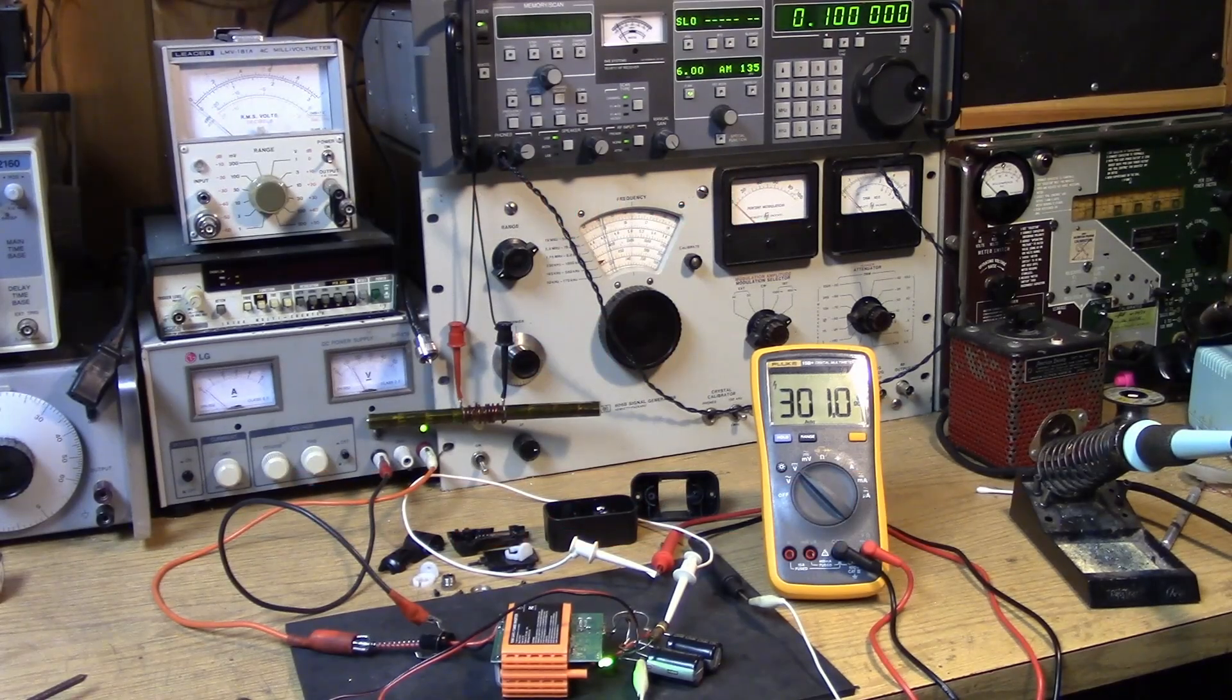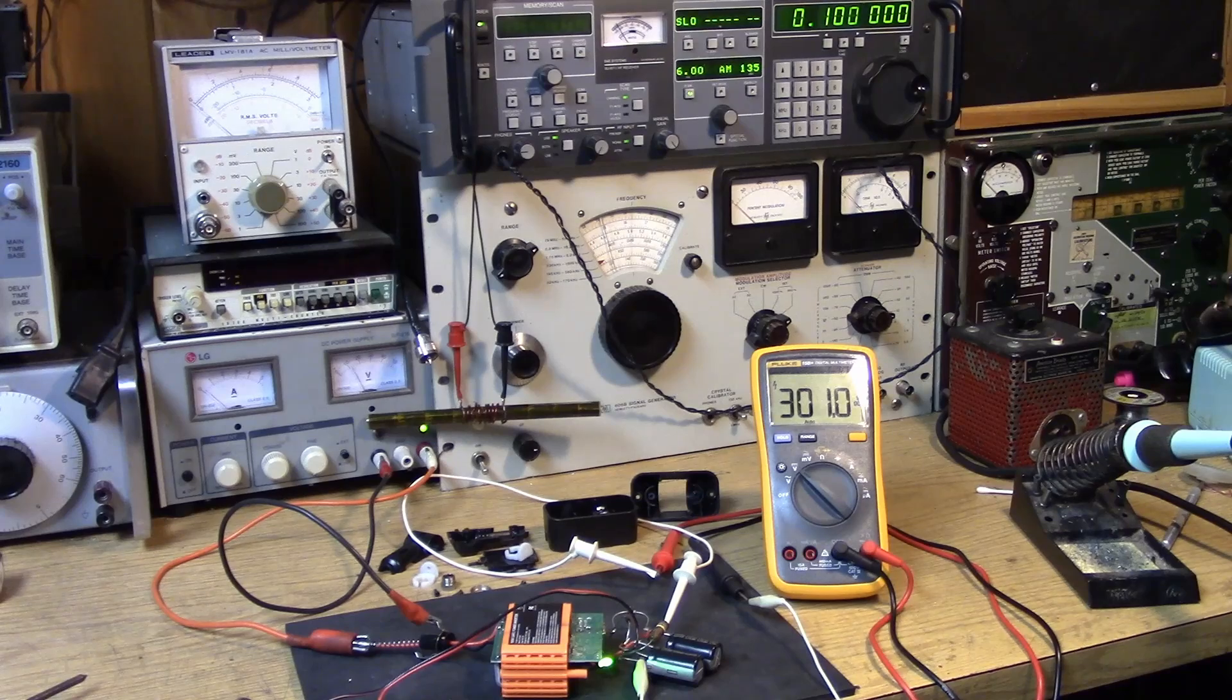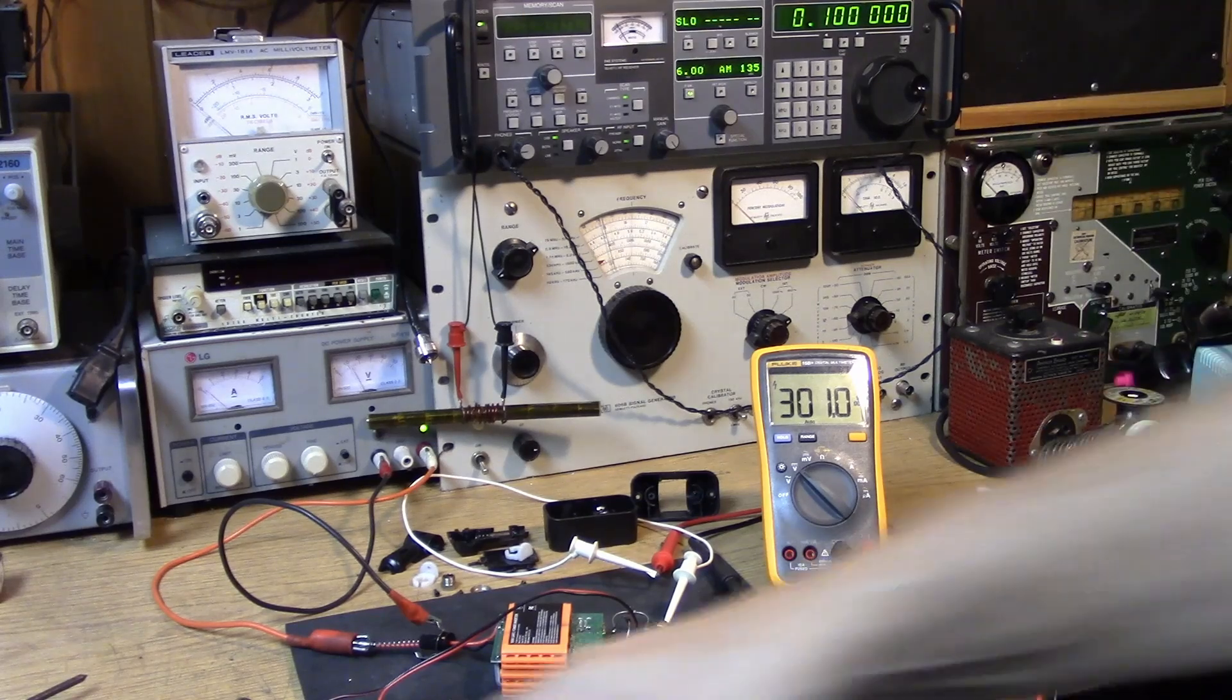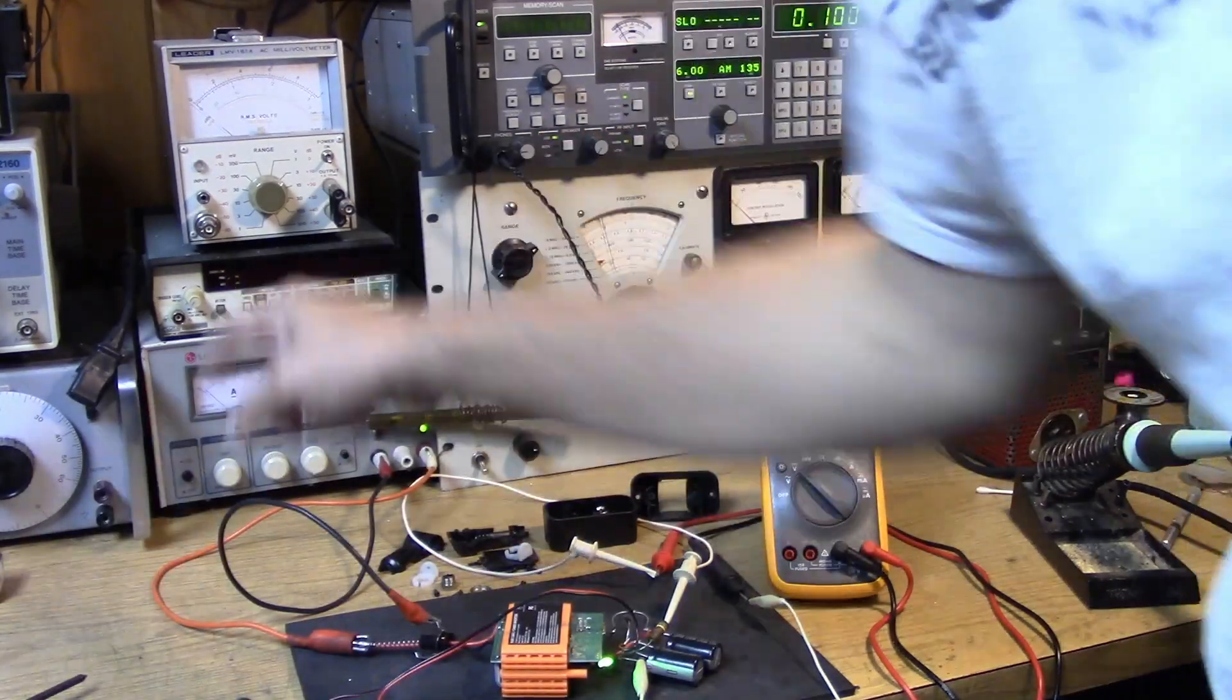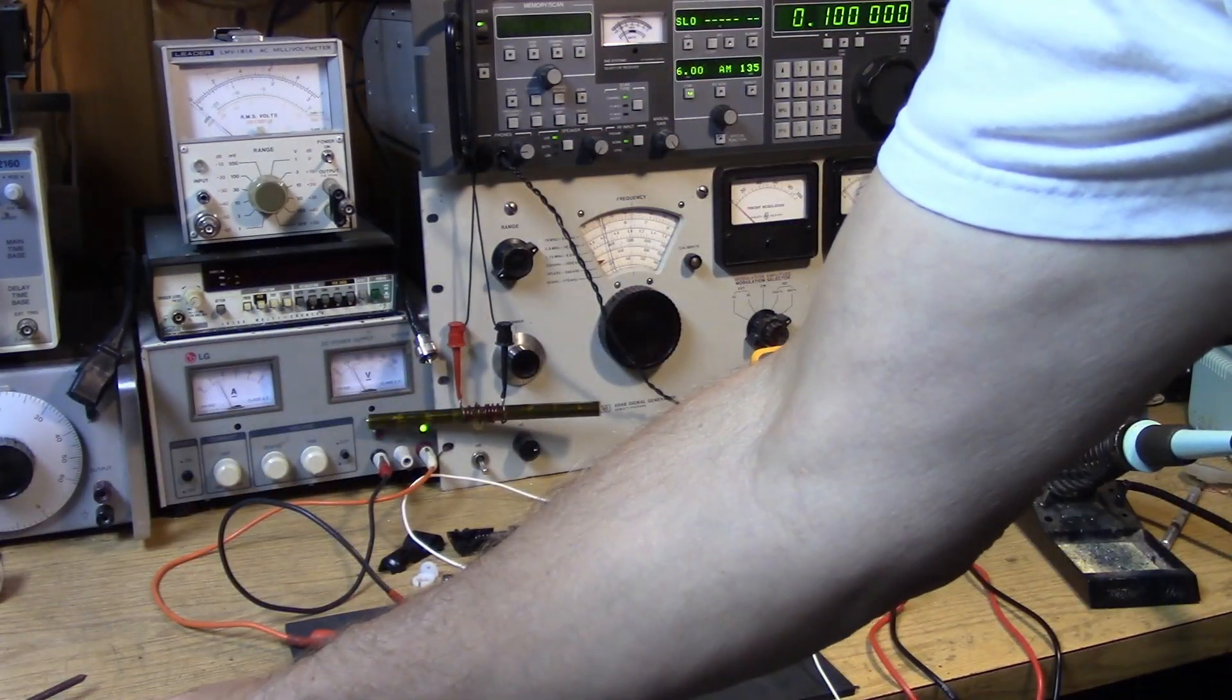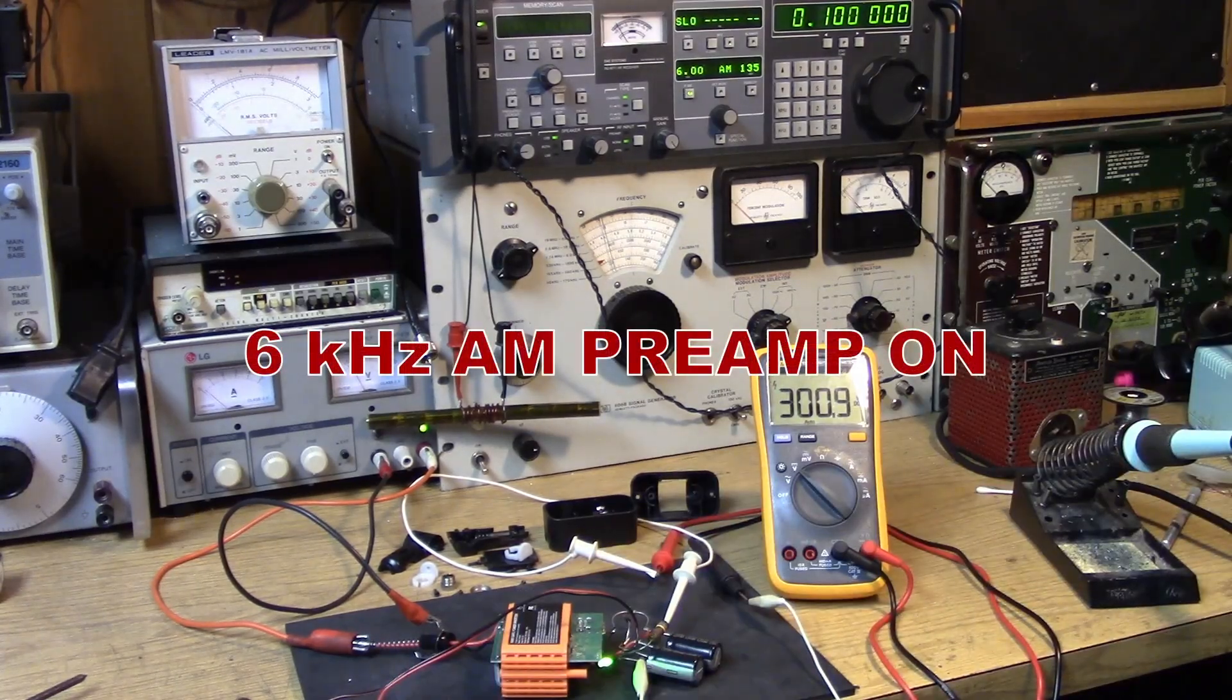So, here's one of the questions you guys will have. And that is, how much hash does this thing put out when it's unloaded in the receive mode, I guess we'd say. And how much when we're in full transmit mode, drawing an amp and a half out of the power supply and putting out 275 volts into the 5K load.